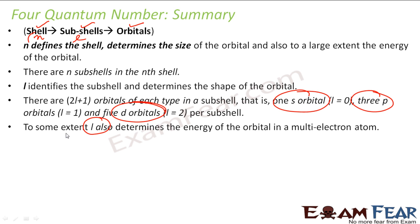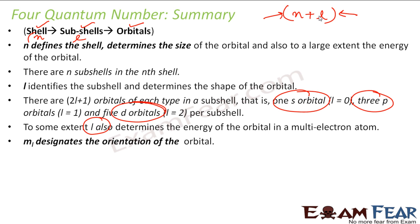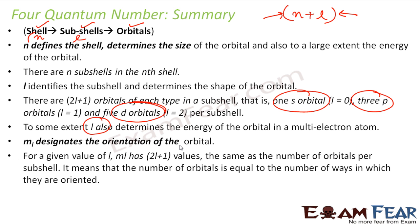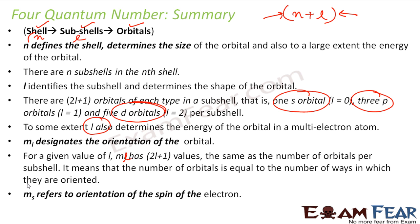L also determines the energy of electrons in multi-electron atoms. The rules are complex, but for our understanding, N plus L determines the energy of an orbital — the one with a higher value of N plus L has more energy. The magnetic quantum number designates the orientation of the orbital, and for a given value of L, ml has 2L plus 1 values. Ms refers to the orientation of spin of the electron.